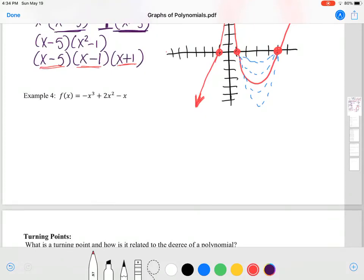Okay, in this example we're going to graph -x³ + 2x² - x. The first thing we want to do is factor it because it's not factored for us. So I'm going to pull out a negative x and that's going to give me x² - 2x + 1 when I pull that out. And then I can factor this further and write this as (x - 1)(x - 1).